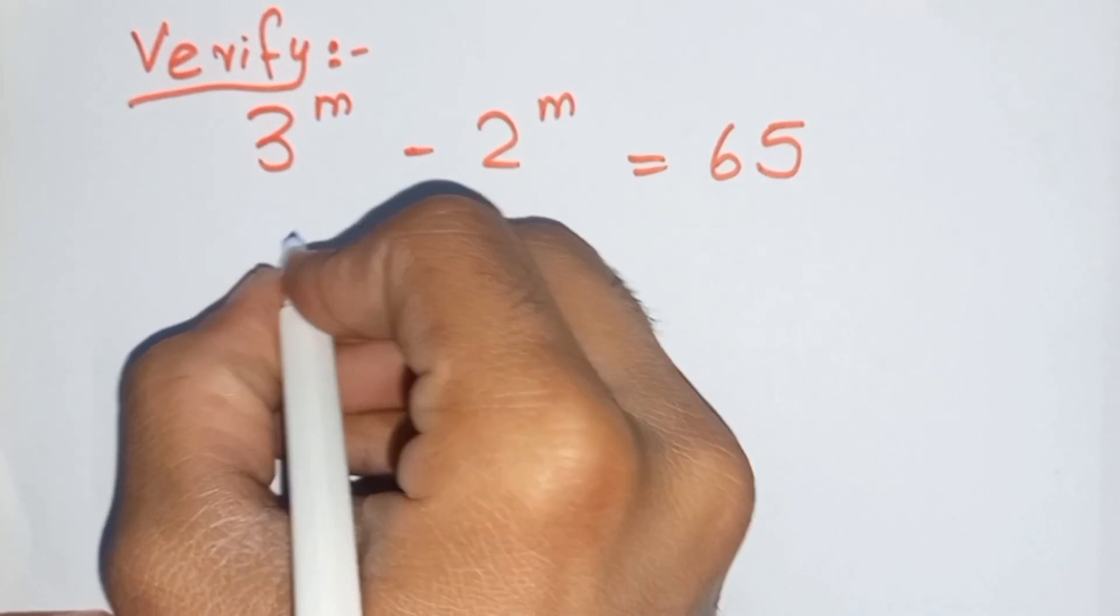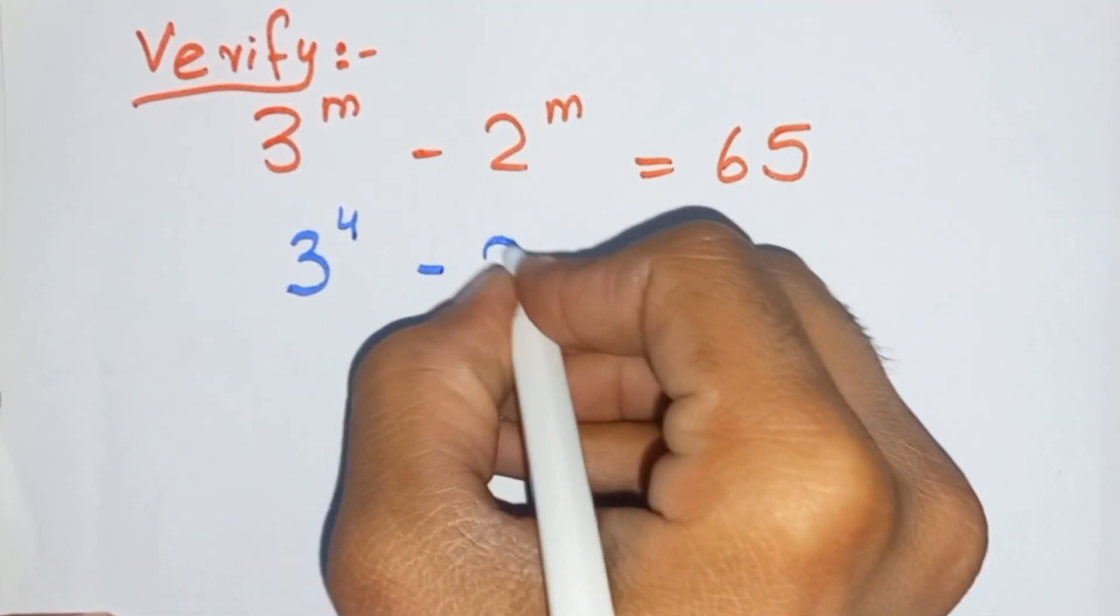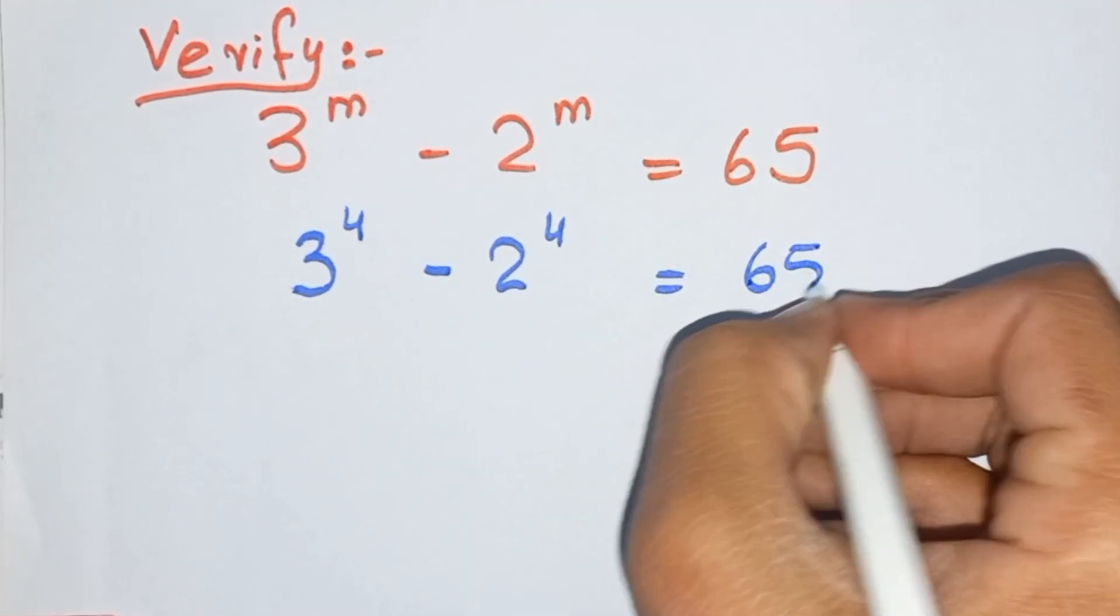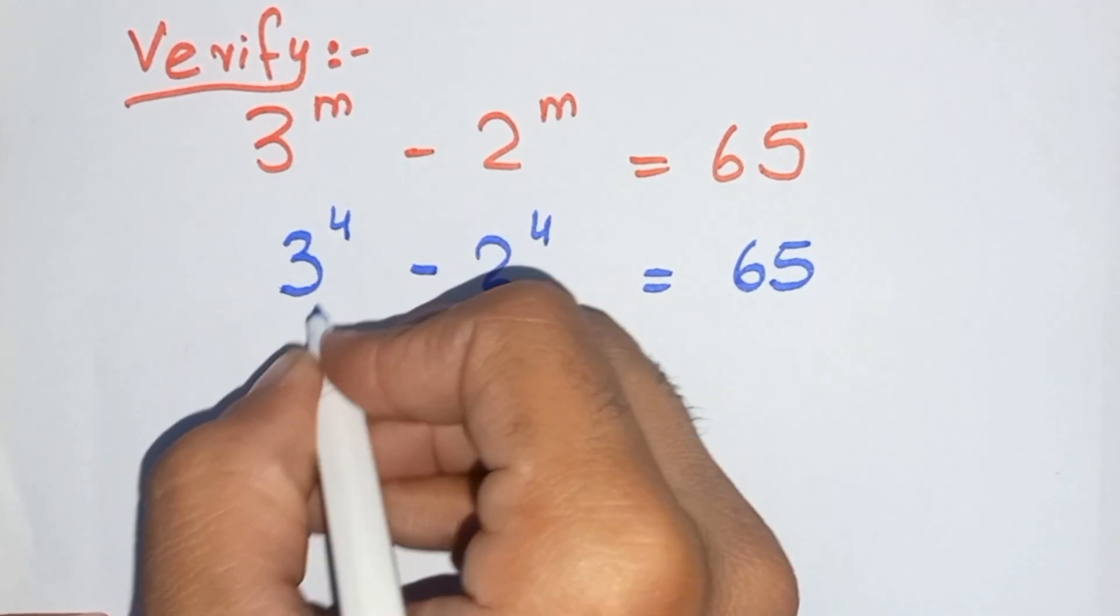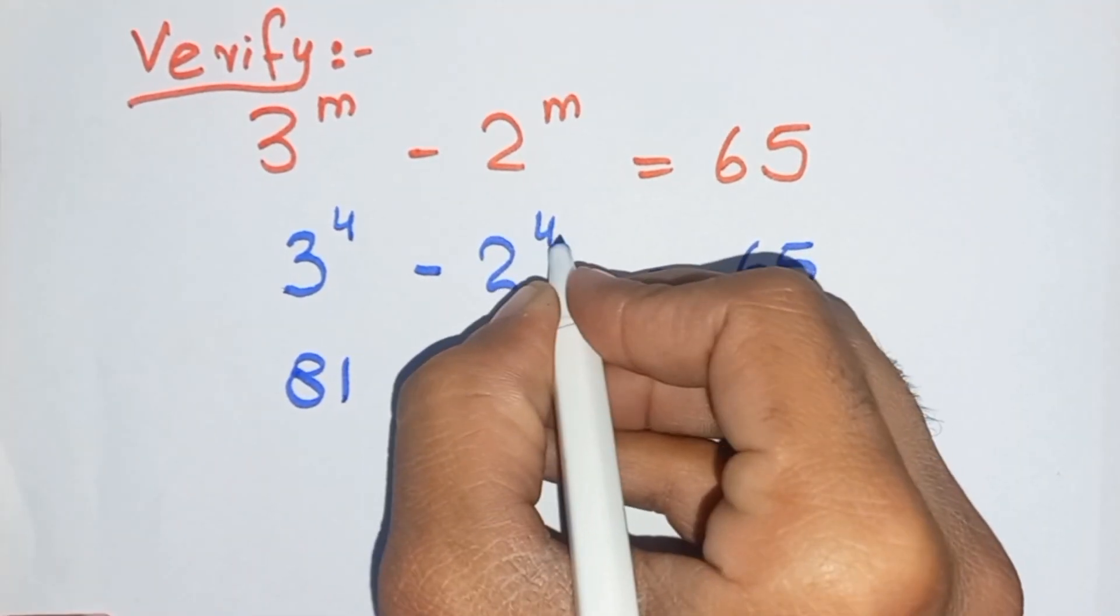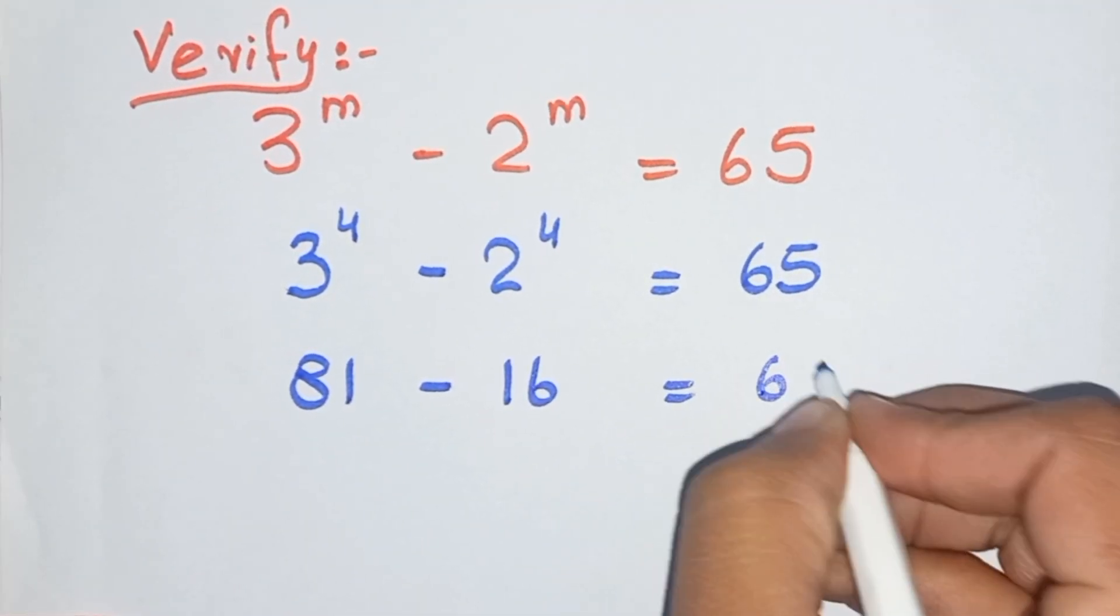Put in the main equation which is 3^4 minus 2^4 equals 65. 3^4 is 81 minus 16 equals 65.